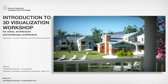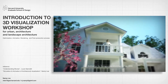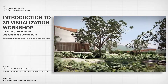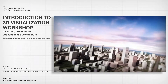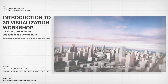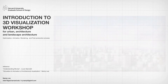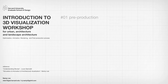The workshop consists of three sections: pre-production, production, and post-production. For the first part, as a pre-production, I'm going to talk about the general process and fundamental ideas about 3D visualization on the basis of the book called Understanding Movies.